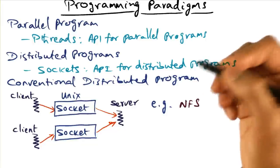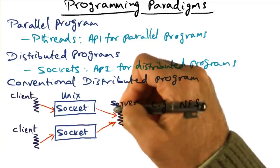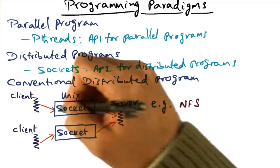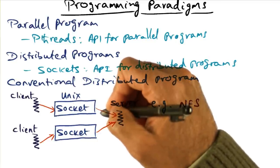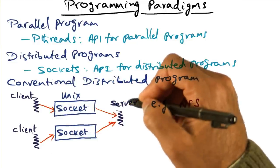For example, you may have a server like an NFS server and clients connect to an NFS server using sockets in order to do the distributed IO between the client and the server.